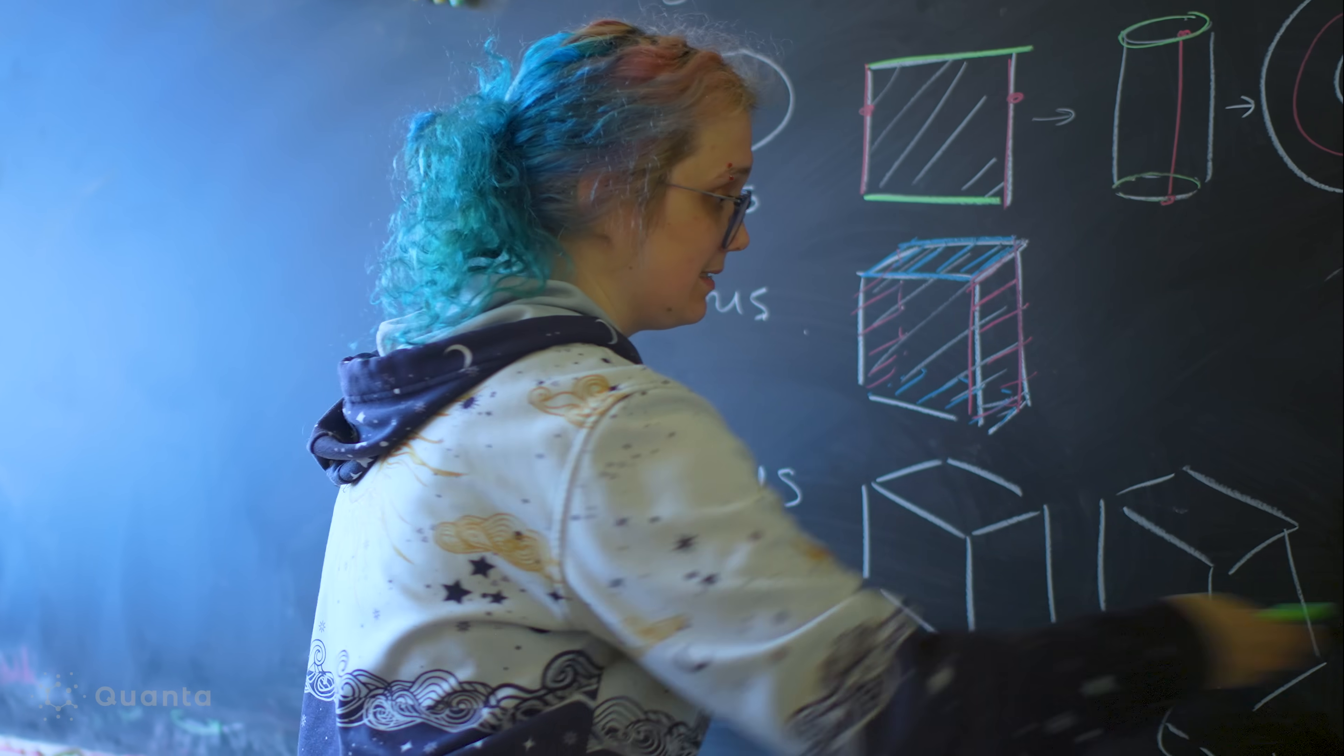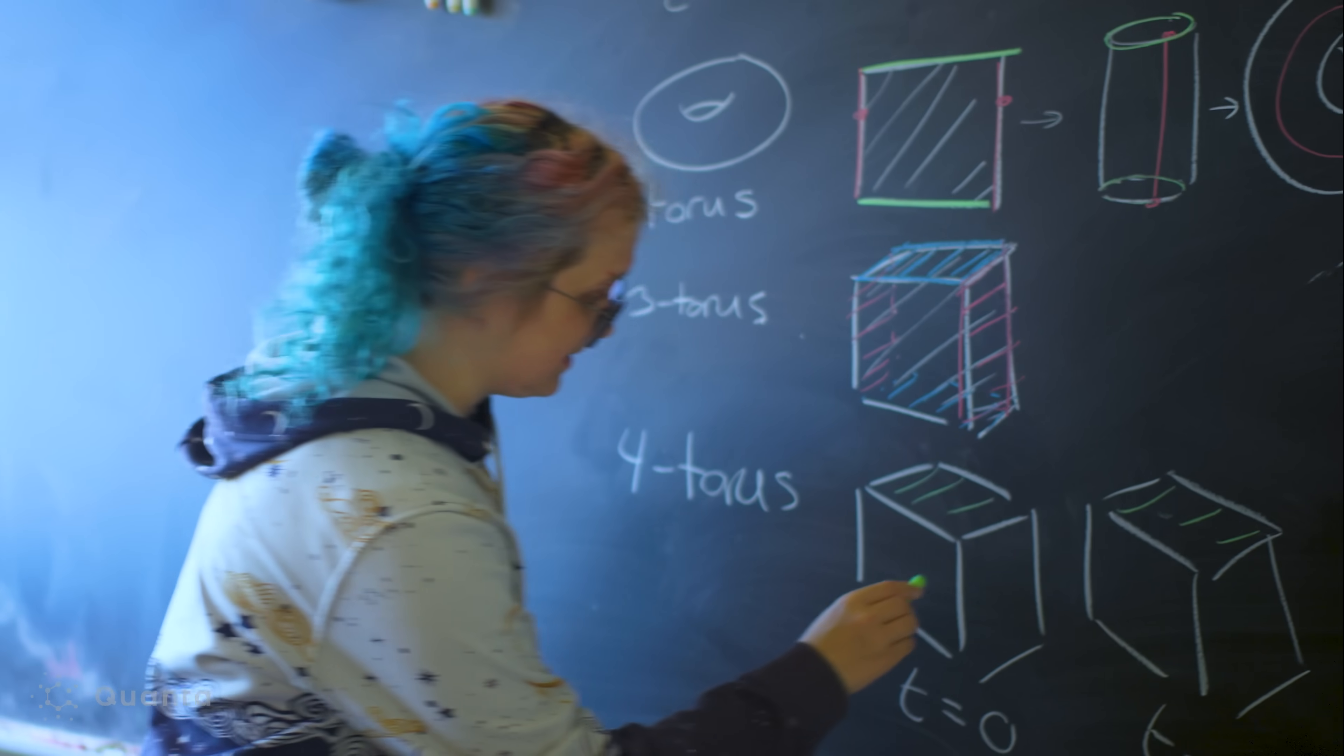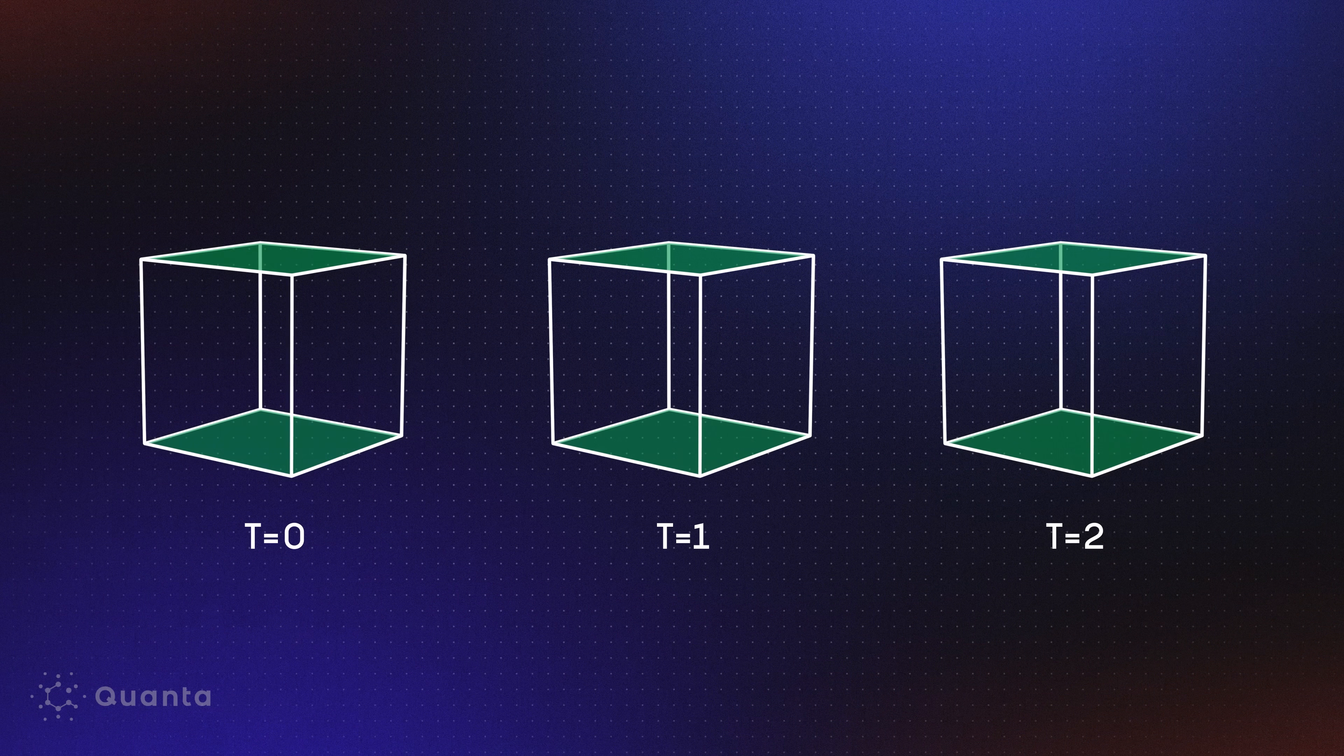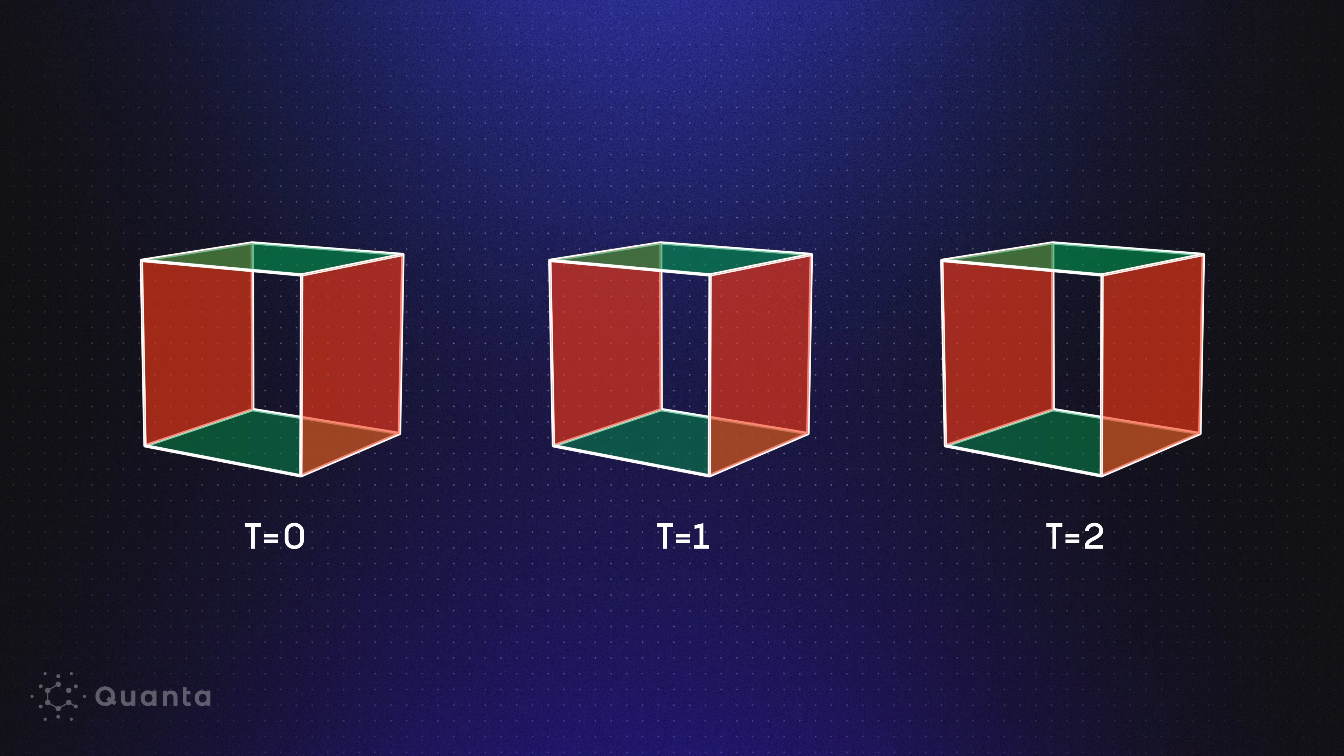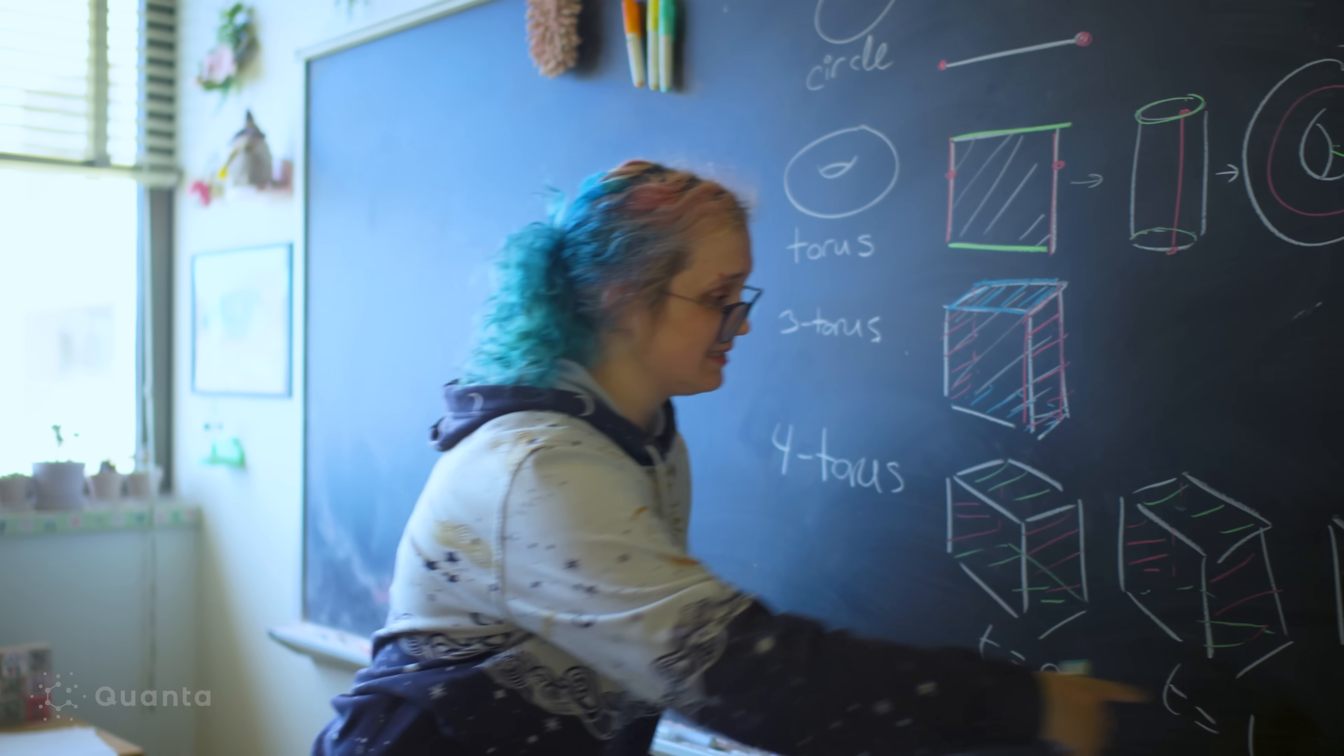If I'm at a point in this four-dimensional object and I run off the top, which could happen at any time, then I need to come back at the corresponding point on the bottom. So I'm going to glue all the tops to all the bottoms. And I'm also going to glue all of the rights to all of the lefts. And then I'm also going to glue all of the fronts to all of the backs. And the last thing I have to say is, well, what about this time direction?